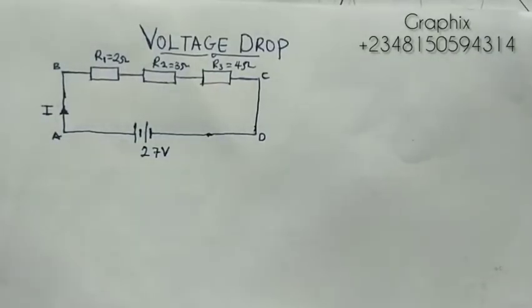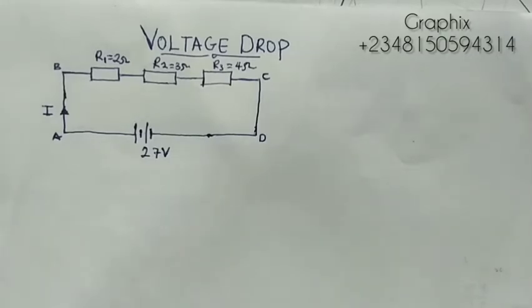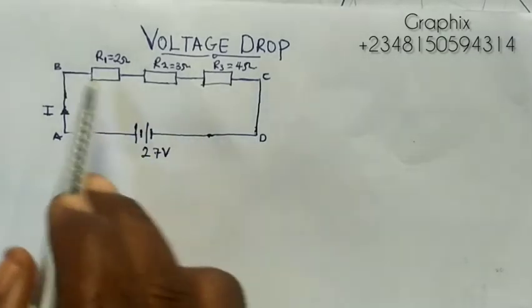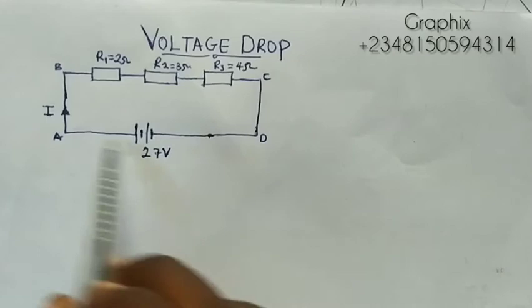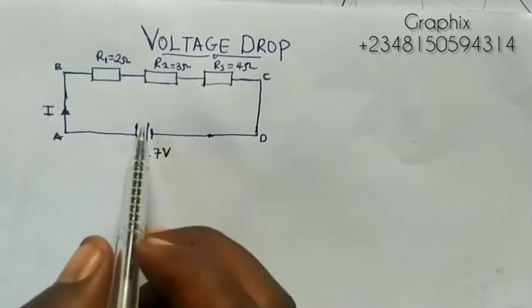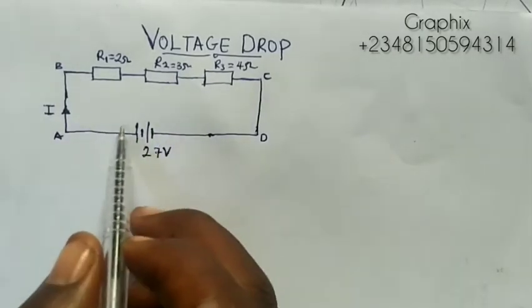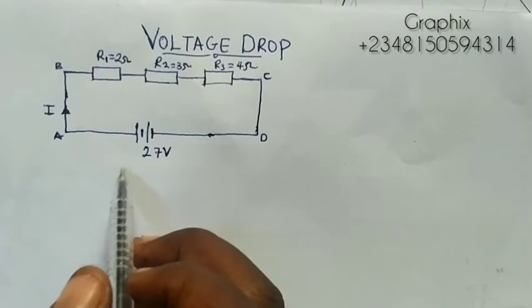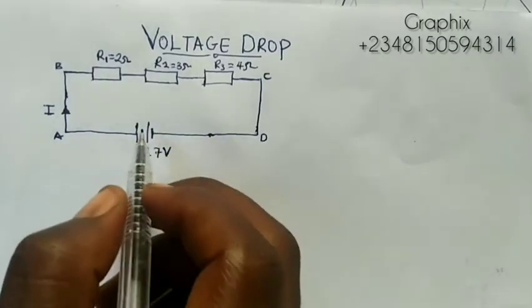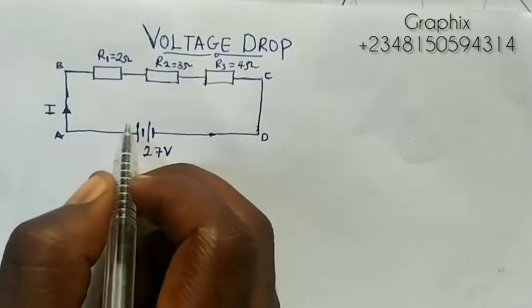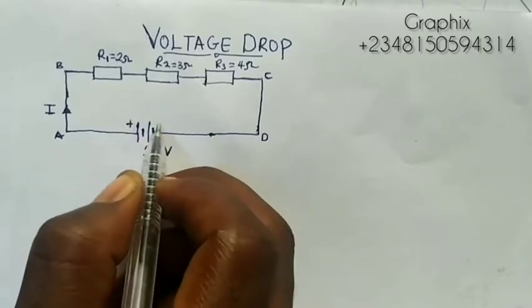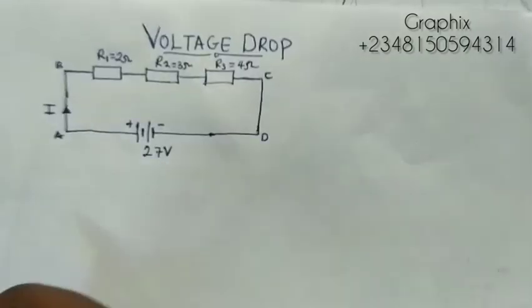Good everyone, my name is Graphix. Today we're looking at an aspect in electric circuits that talks about voltage drop. Now if you look at this circuit here, it is a closed loop and this is a source, and there is a battery. The longer side of the battery here is positive while the shorter side is negative.